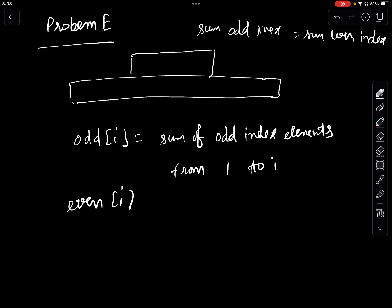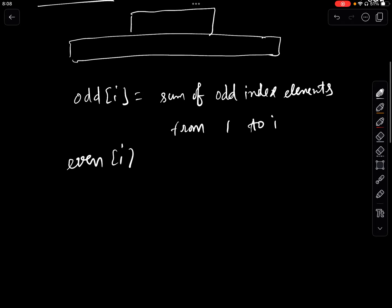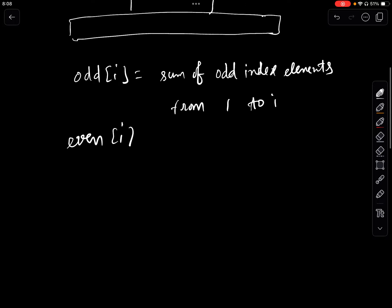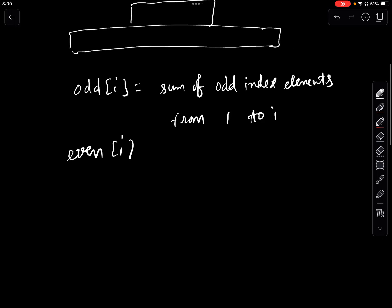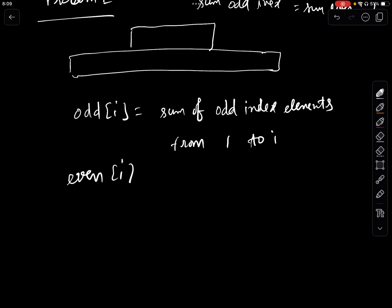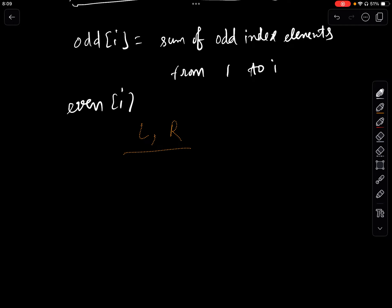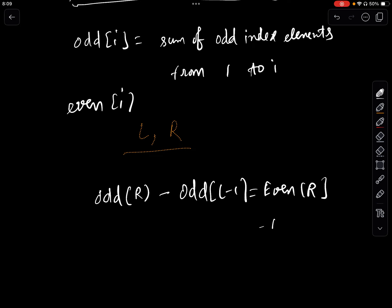We have to find a subarray in which the sum of odd-index elements equals the sum of even-index elements. We'll write that requirement in terms of these prefix sum arrays. If our required indexes are l and r, then the sum of odd indices in that range is odd[r] minus odd[l-1], and that should equal even[r] minus even[l-1].